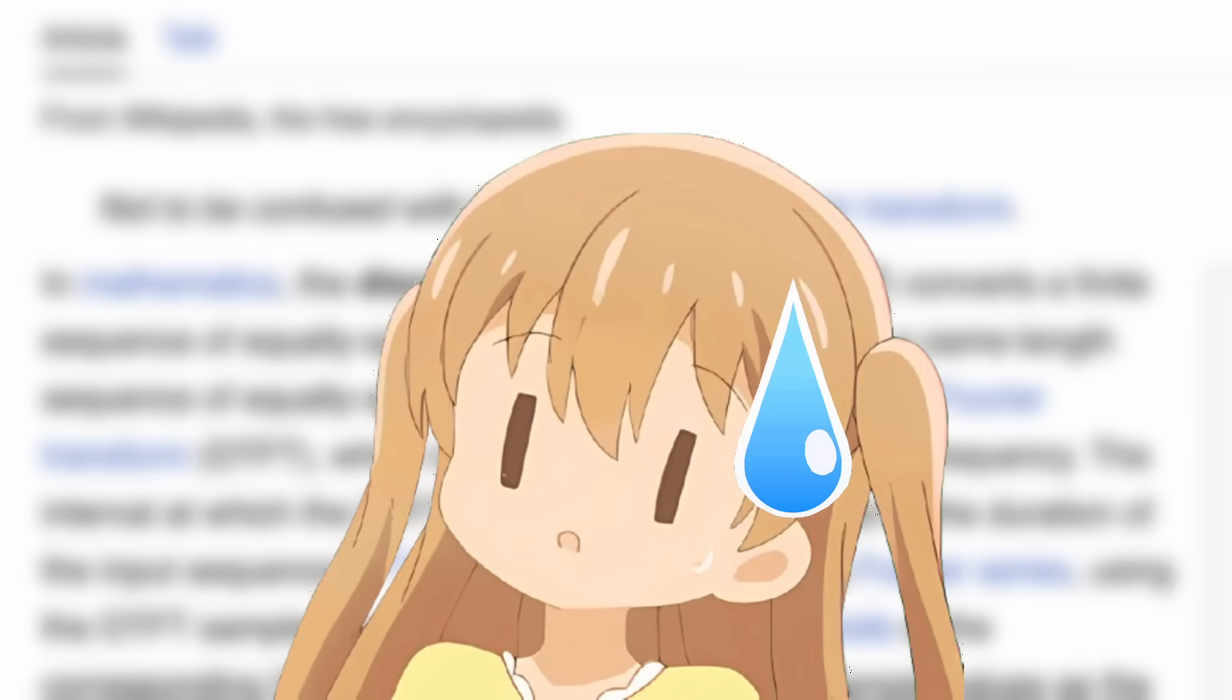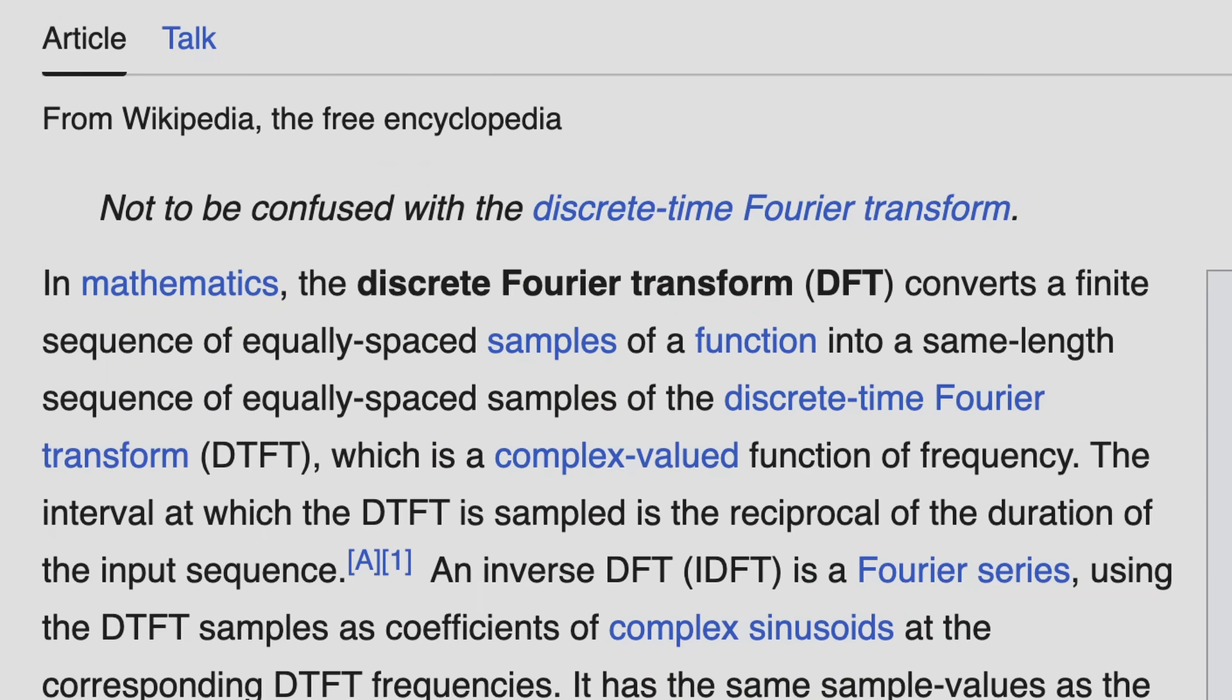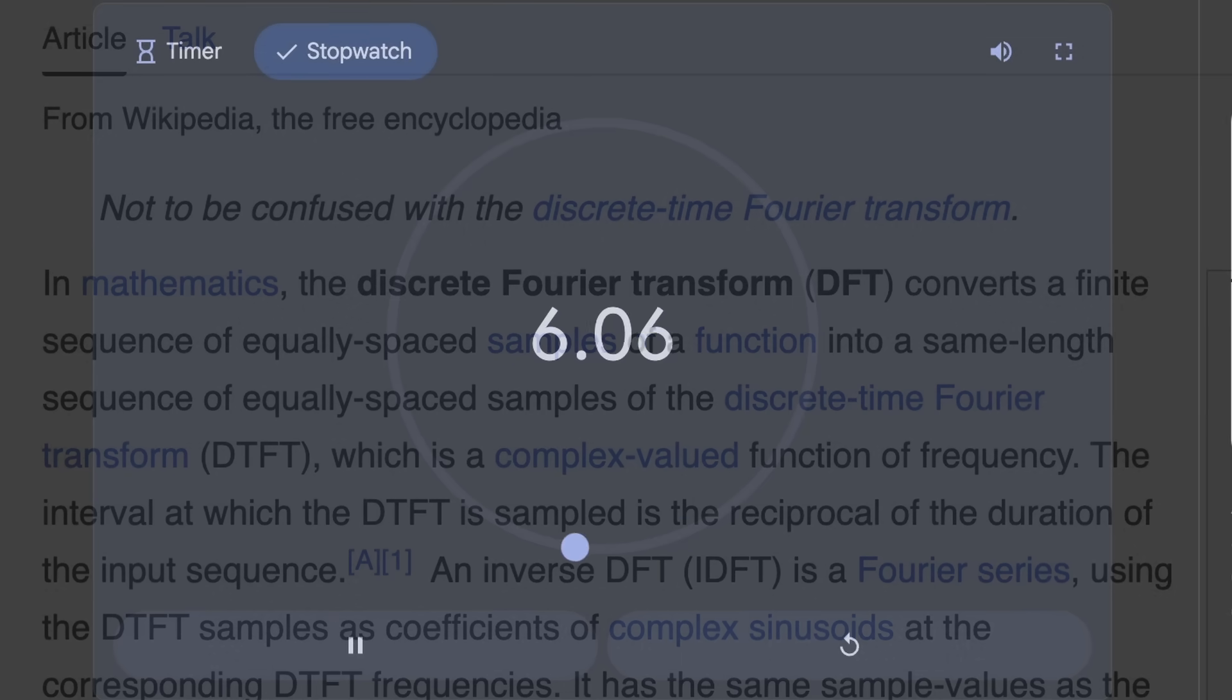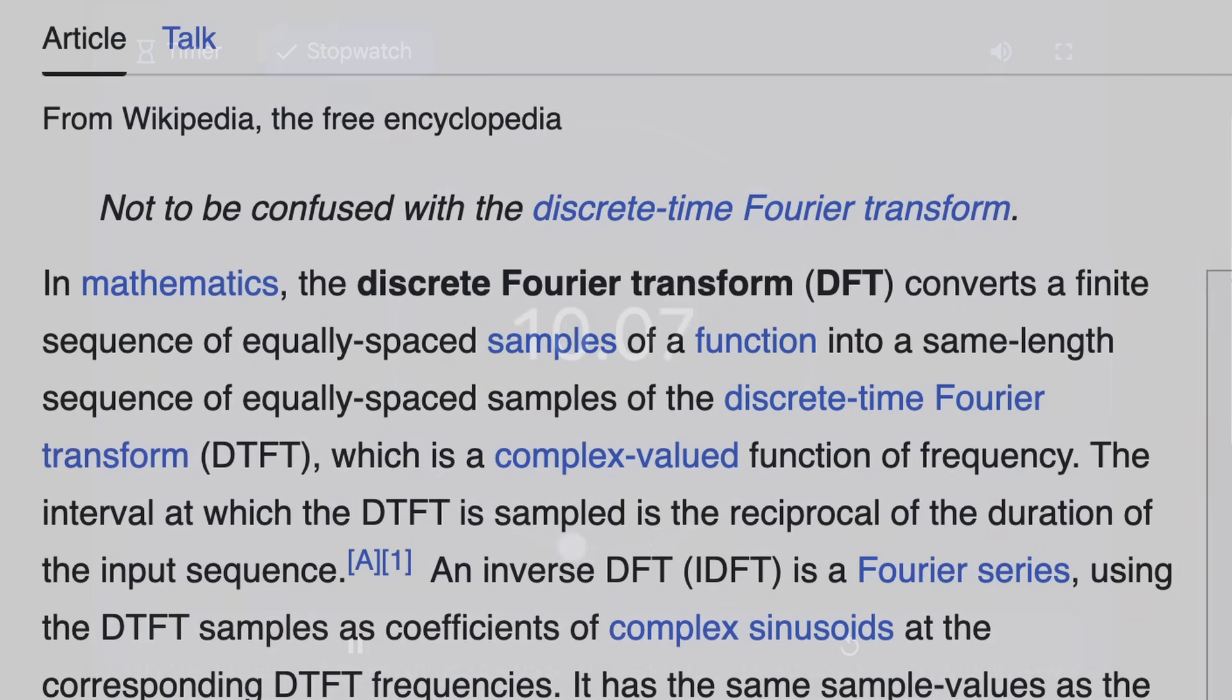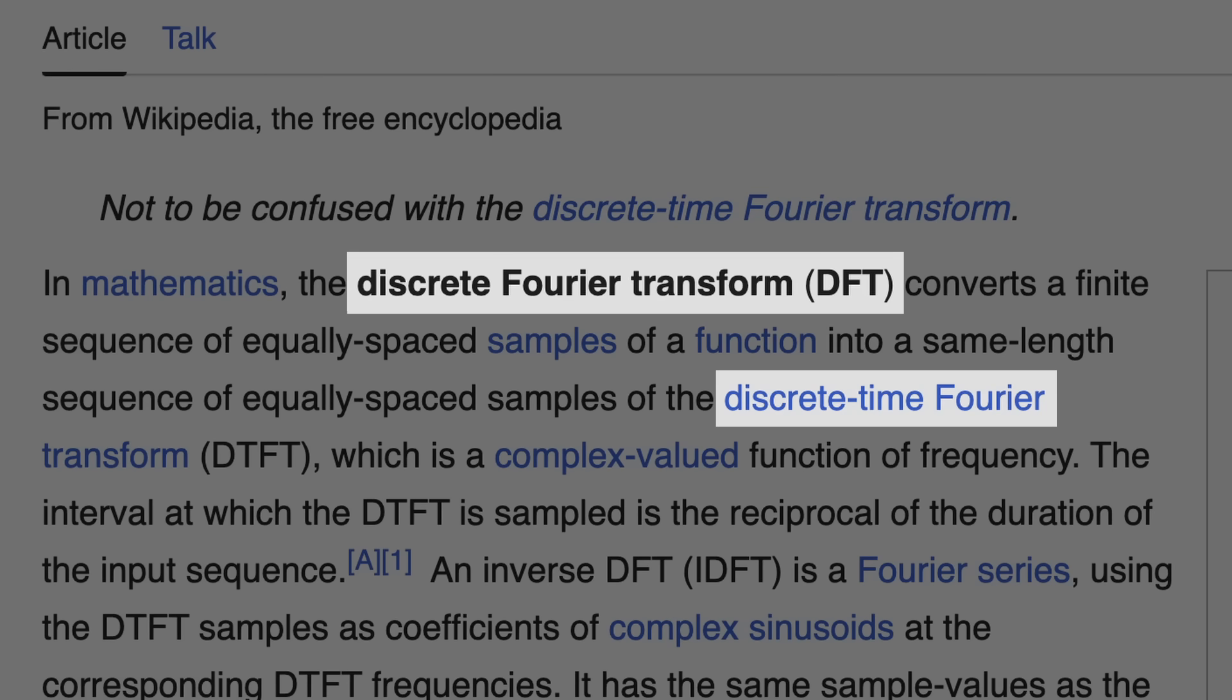Have you ever seen a Wikipedia article that left you more confused than when you first found it? In mathematics, the discrete Fourier transform converts a finite sequence of equally spaced samples into a same length sequence of equally spaced samples of the discrete-time Fourier transform.